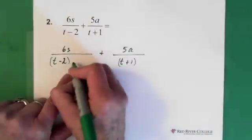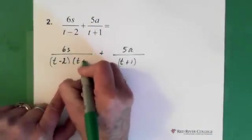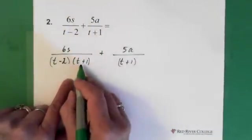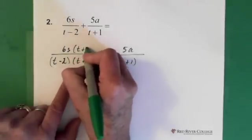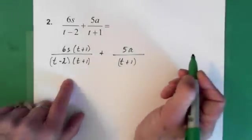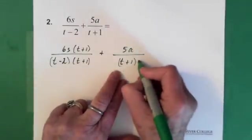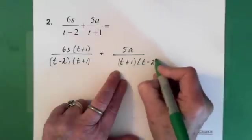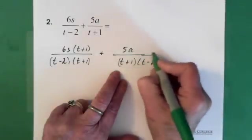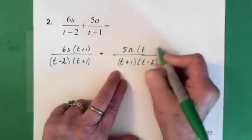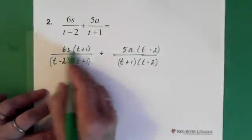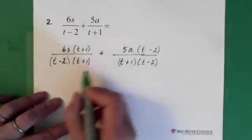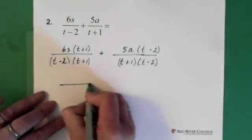So we're going to multiply this one times t plus 1. If we multiply in the denominator by t plus 1, we must multiply in the numerator by t plus 1. This denominator, we're multiplying by t minus 2. So we have to multiply the numerator by t minus 2. So now, we can multiply through here. But let's make the denominator all the same.